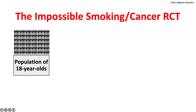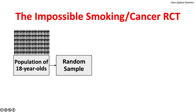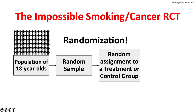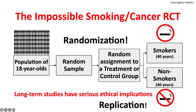Such a test would start with a population of 18-year-olds, take a random sample, and randomly assign subjects to treatment or control groups. Those in the treatment group would be required to smoke for 40 years; those in the control group would be forbidden from smoking. After 40 years, cancer rates for both groups would be compared and results replicated. Such long-term tests have serious ethical implications — institutional review boards would not approve such research.